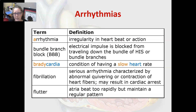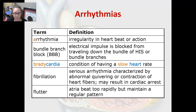An arrhythmia is an irregularity in the heartbeat or heart action. A bundle branch block is when an electrical impulse is blocked from traveling down the bundle of His or the bundle branches, so that part of the muscle cannot contract properly. Bradycardia is a condition of having a slow heart rate.